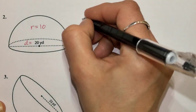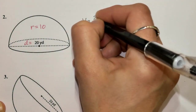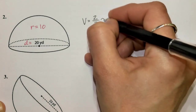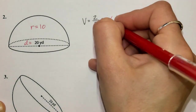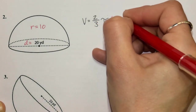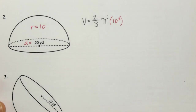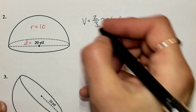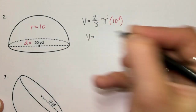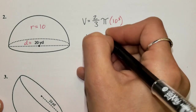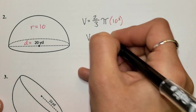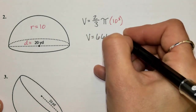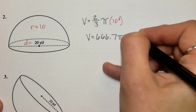We're doing hemispheres, so it's two-thirds pi times 10 cubed. Please pause and plug into the calculator yourself. In terms of pi we get 666.7π yards cubed.